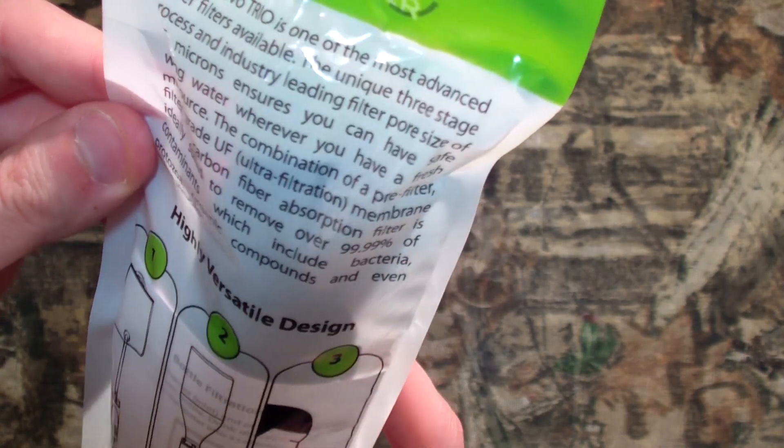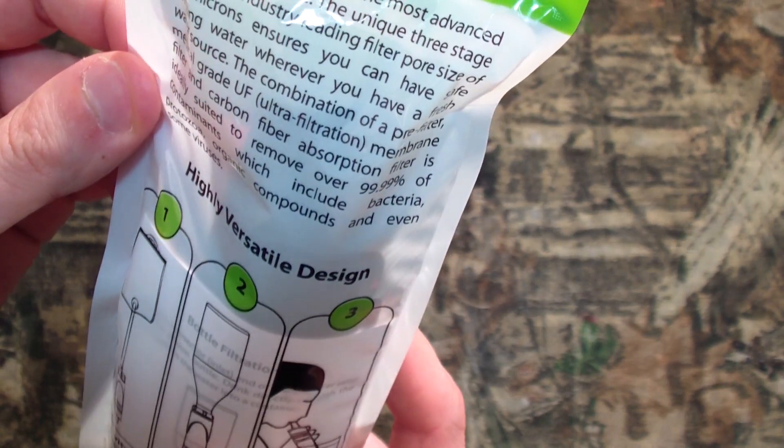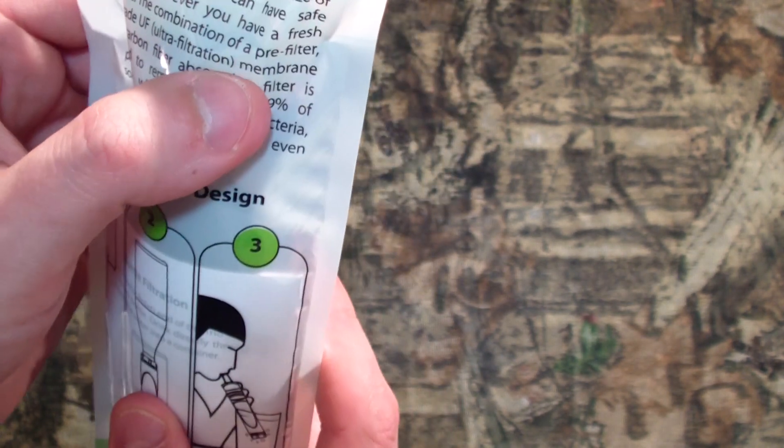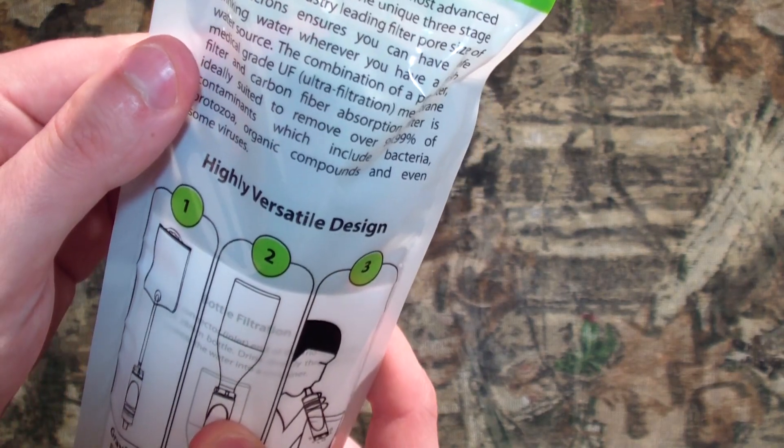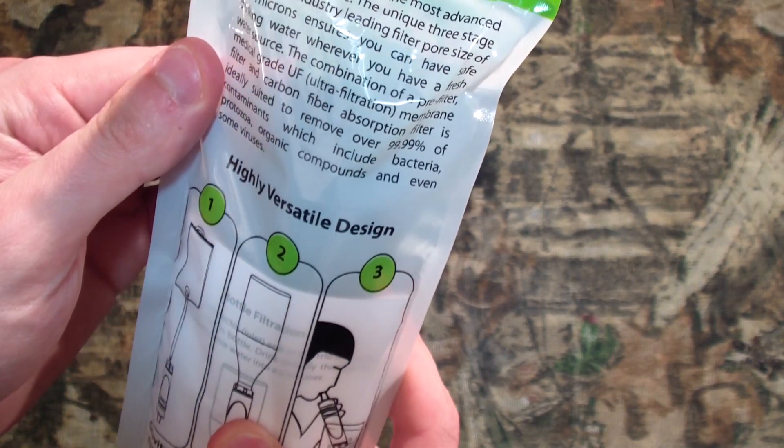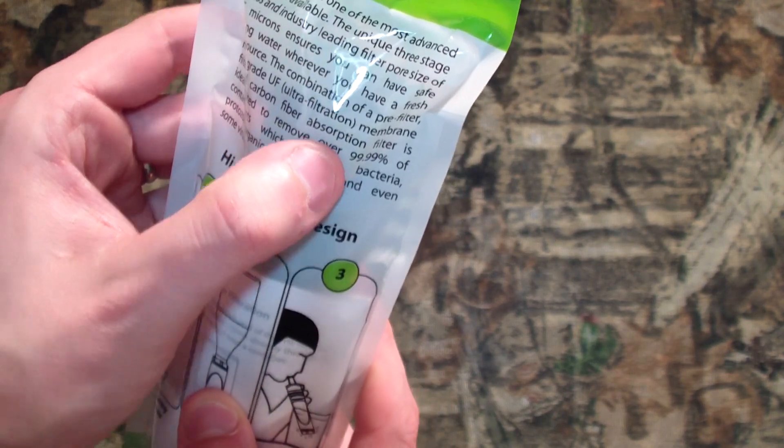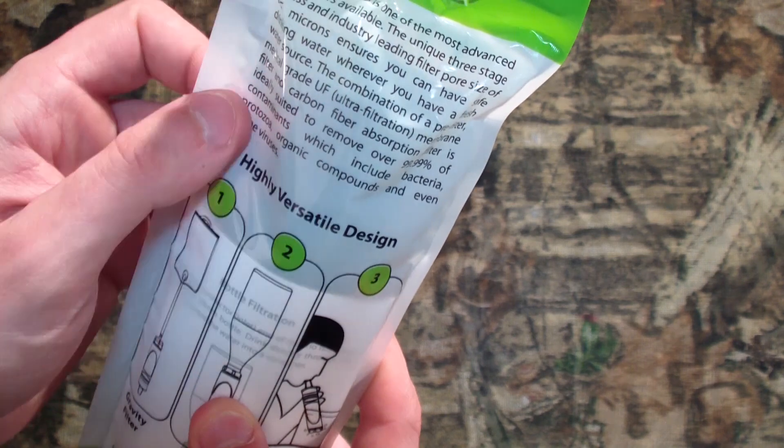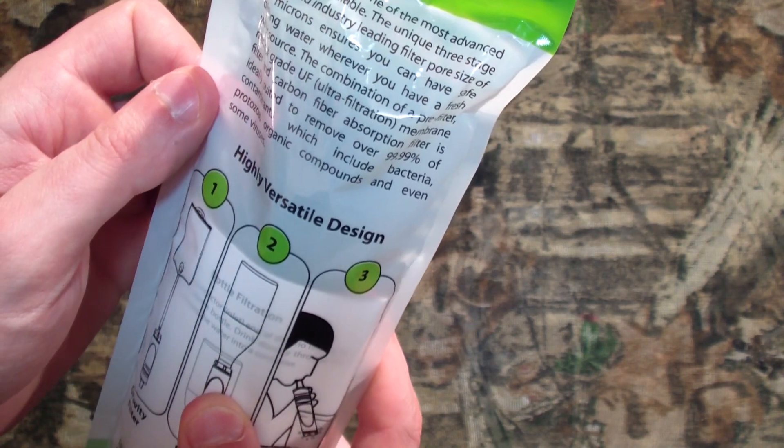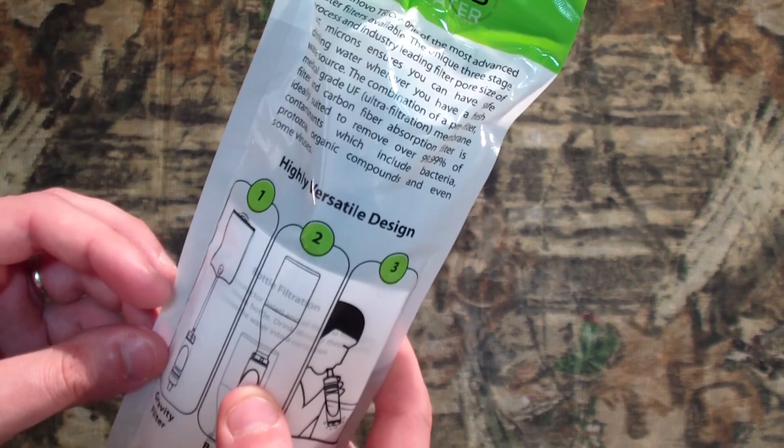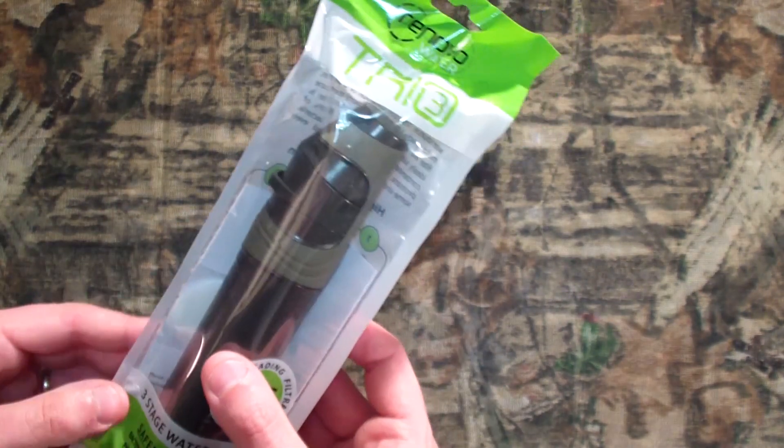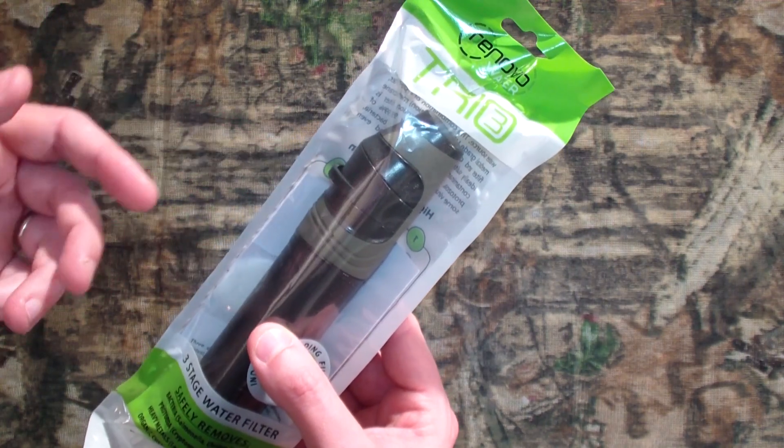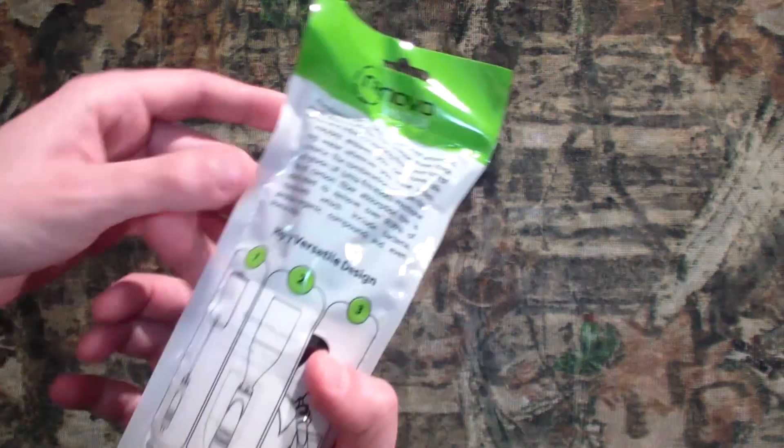So there must be more going on in here than just regular filtration. Combination of pre-filter, medical-grade ultra-filtration membrane filter, and a carbon fiber absorption filter. Wow. It's ideally suited to remove over 99.99% of contaminants, including bacteria, protozoa, organic compounds, and even some viruses. That's new to me, having a carbon filter built in and then basically two levels of filtration before it. That's pretty cool.